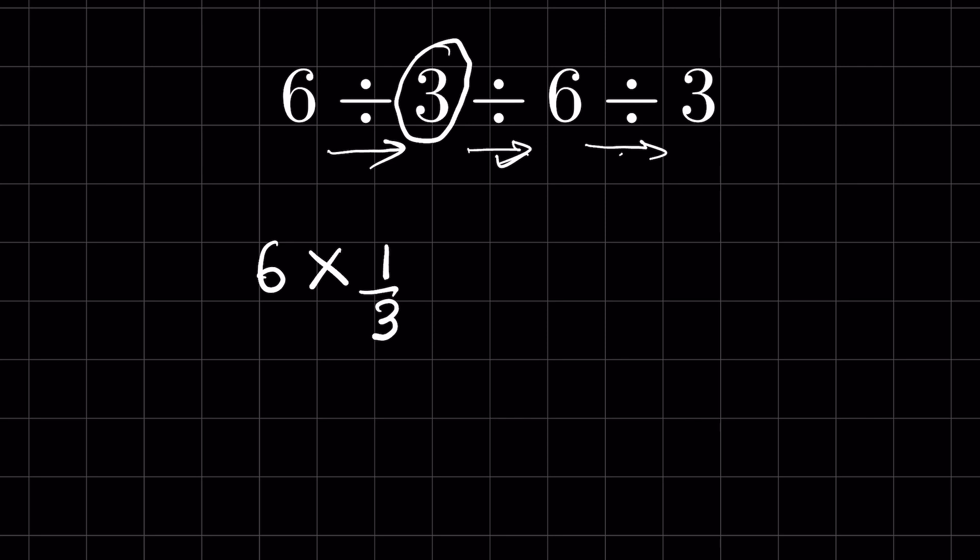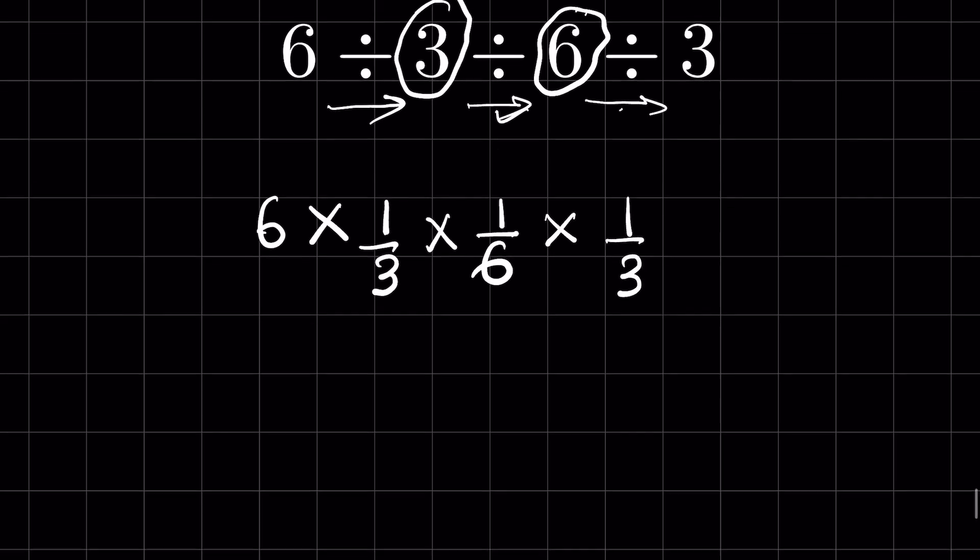The rest of the divisions or we can convert these divisions here only. Again, this division when converted into multiplication, the number after that gets inverted, so it will be 1 upon 6. We have to write the reciprocal of the numbers. Whenever we convert division into multiplication, the number just after that gets inverted. Then again there is division, then convert it into multiplication and it will be 1 upon 3.